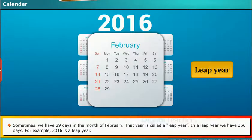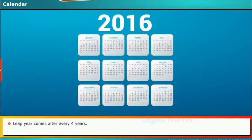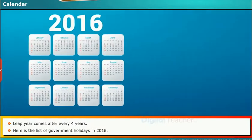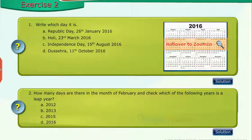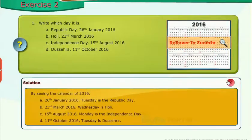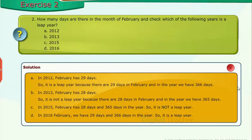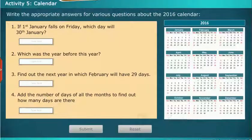For example, 2016 is a leap year. Leap year comes after every 4 years. Here is the list of government holidays in 2016. Let us solve some exercise problems — write the appropriate answers for various questions about the 2016 calendar.